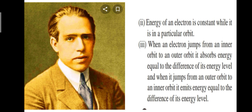According to Bohr, electrons move in circular orbits at certain distances from the nucleus. The energy of an electron is constant while it is in a particular orbit. When an electron jumps from an inner orbit to an outer orbit, it absorbs energy equal to the difference of its energy levels. And when it jumps from an outer orbit to an inner orbit, it emits energy equal to the difference of its energy levels.